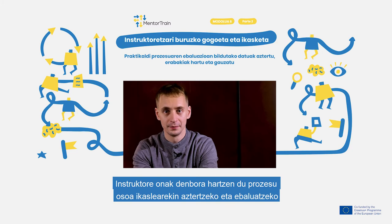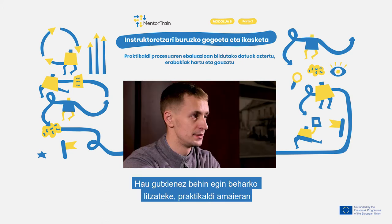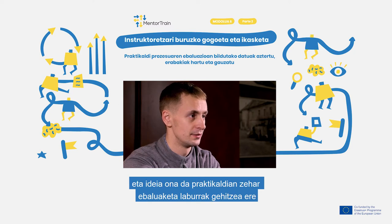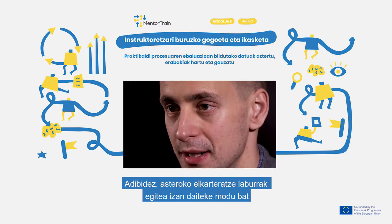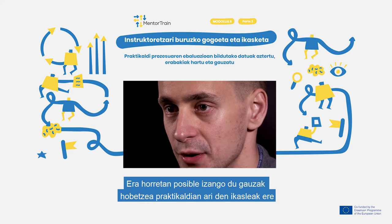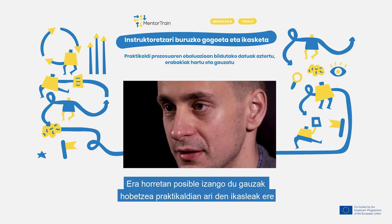A good mentor takes time to meet and discuss the overall execution of the apprenticeship with the apprentice to evaluate the process. This should be done at least once at the end of the apprenticeship, but it is not a bad idea to do short evaluation sessions throughout. For example, during weekly meetups a short time can be dedicated to it, which offers an opportunity to improve things already for the current apprentice.